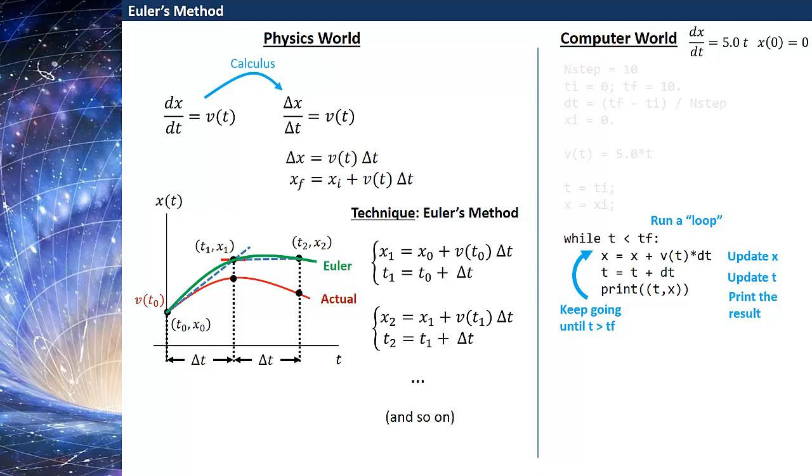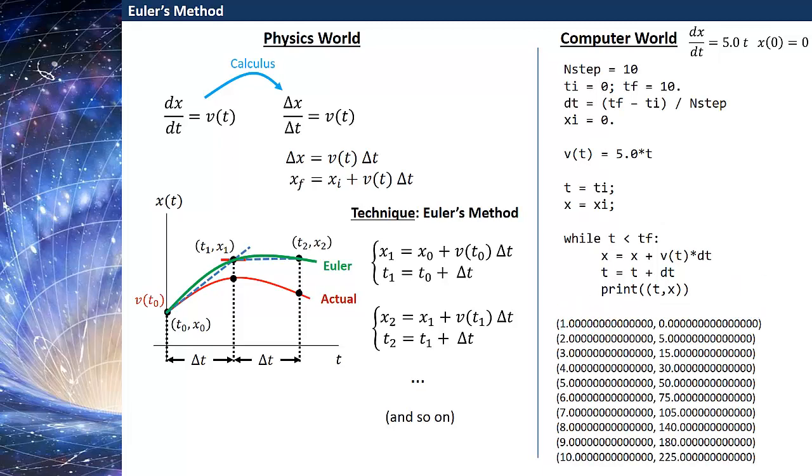So when you run this code what it'll do is it will run through this loop until t is equal to tf, and then I find this output for my data.